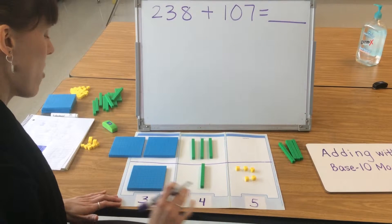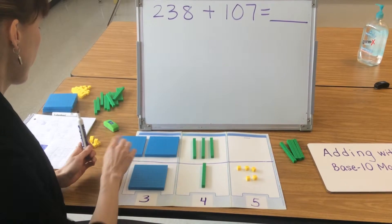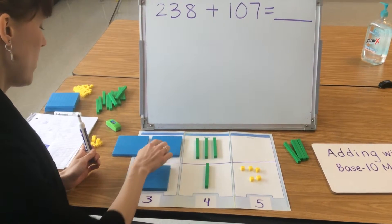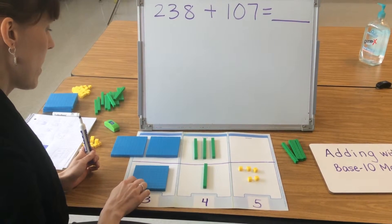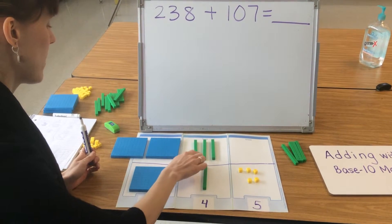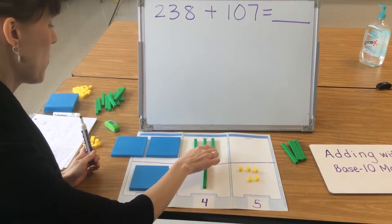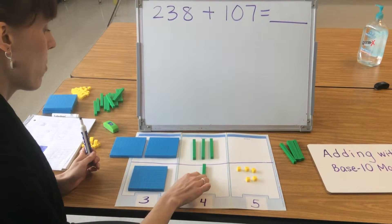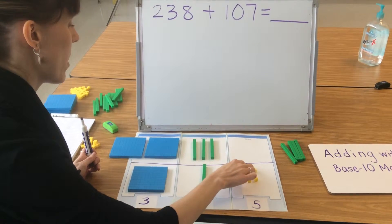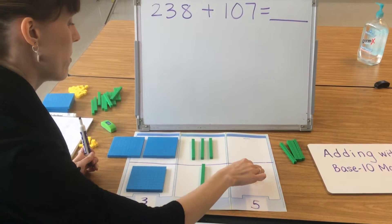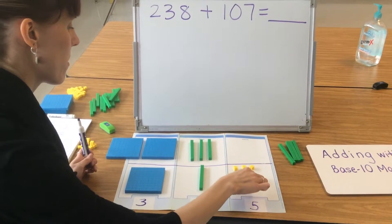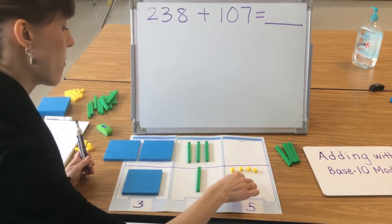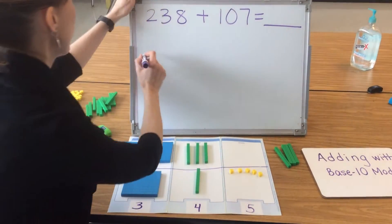So the total should be 345: 100, 200, 300, 310, 320, 330, 340, 341, 342, 343, 344, 345.